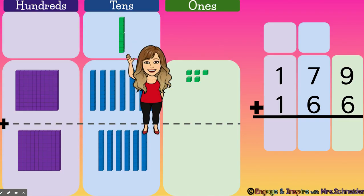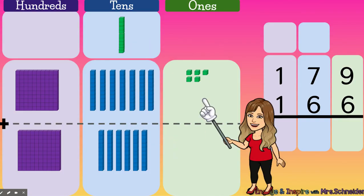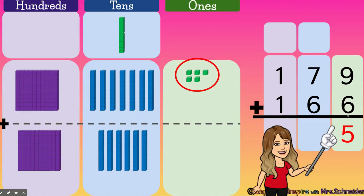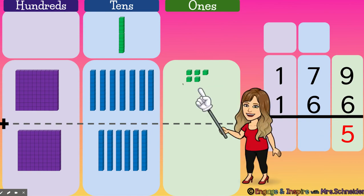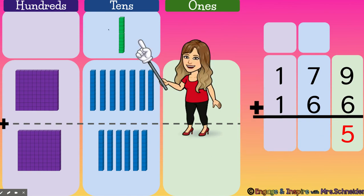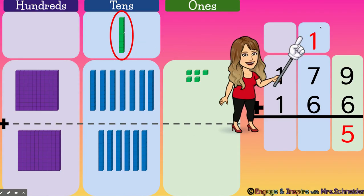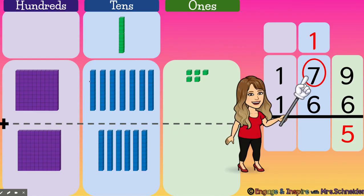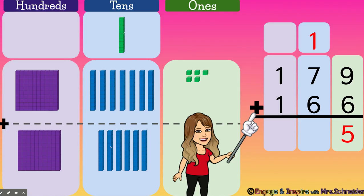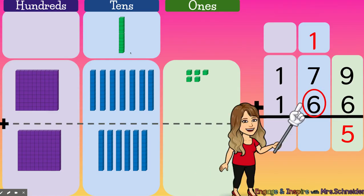I'm going to carry that 10 over to the tens place. I have five ones left, so I'm going to write a five in my ones place — but nine plus six is not five, it's 15. So I have to remember to write that I carried my 10 to the tens place. So over here I'm going to write that I carried one 10. Now I'm going to add up my tens: one 10 plus seven tens plus six tens.